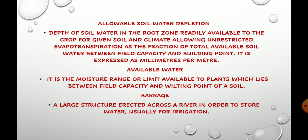Available water is another related term. It is the moisture range or limit which is available to the plant, lying between field capacity and wilting point of a soil. The moisture range between field capacity and wilting point that is available to the plant is known as available water.